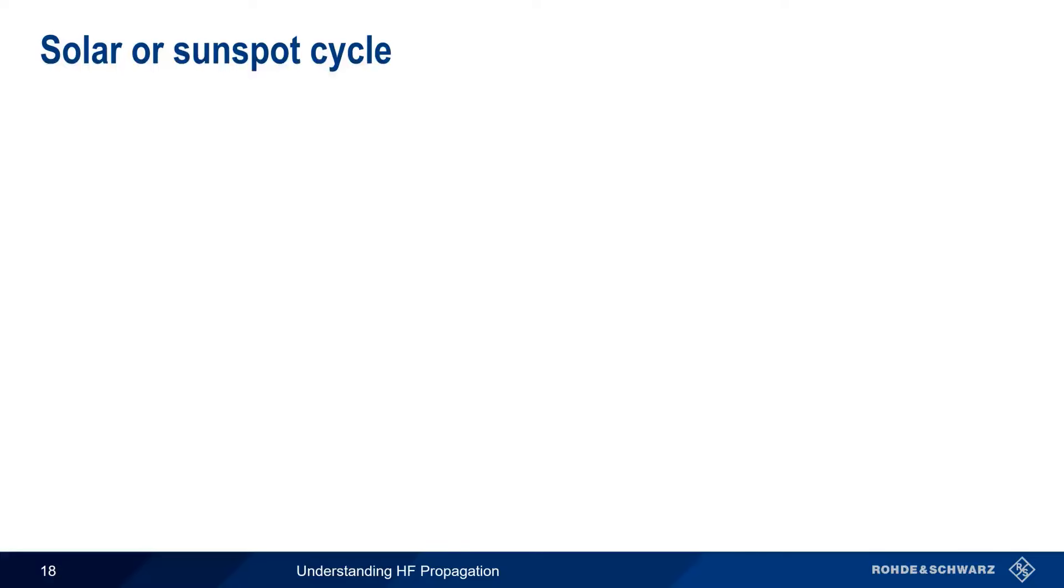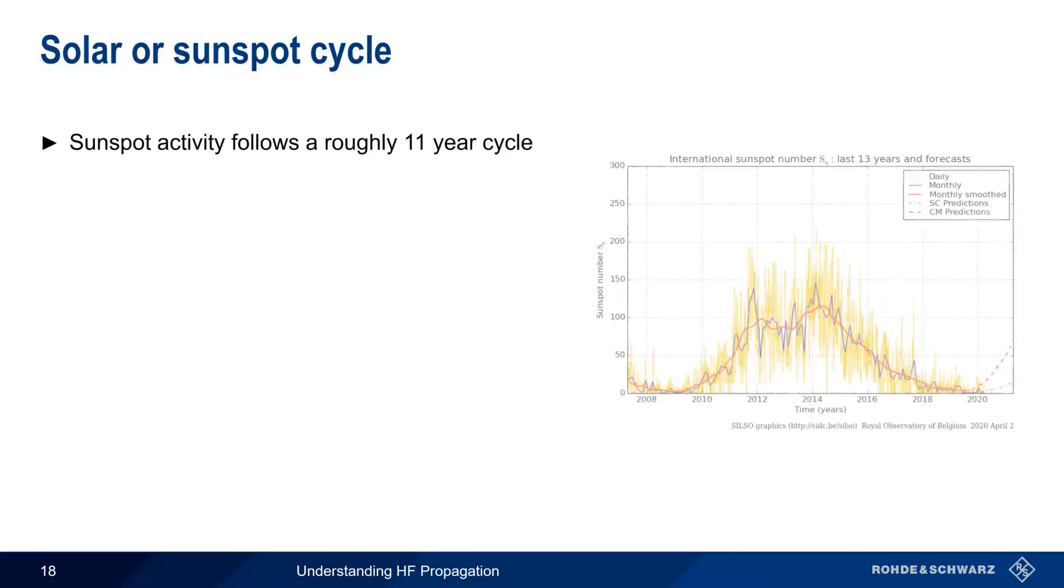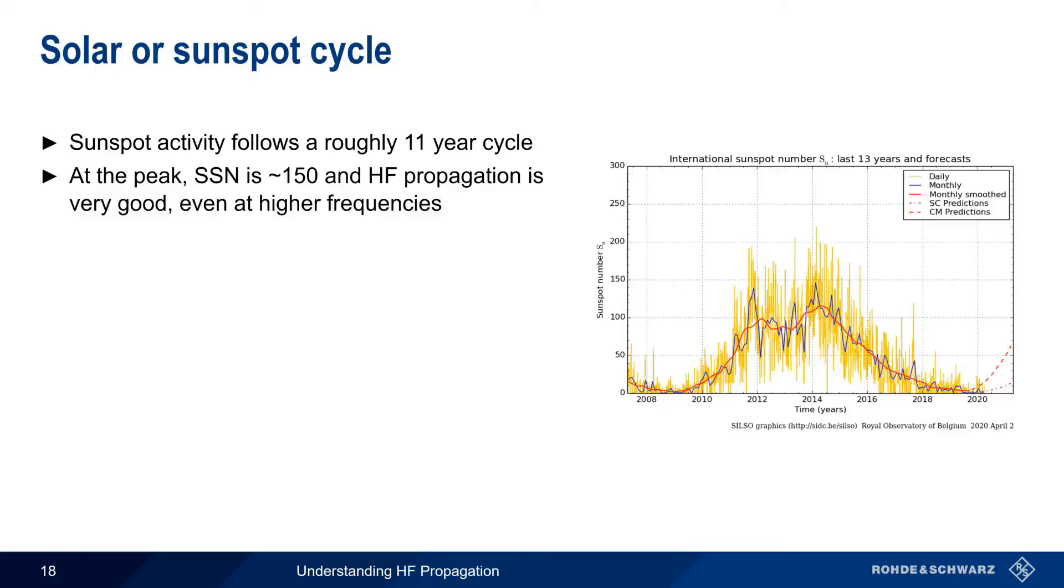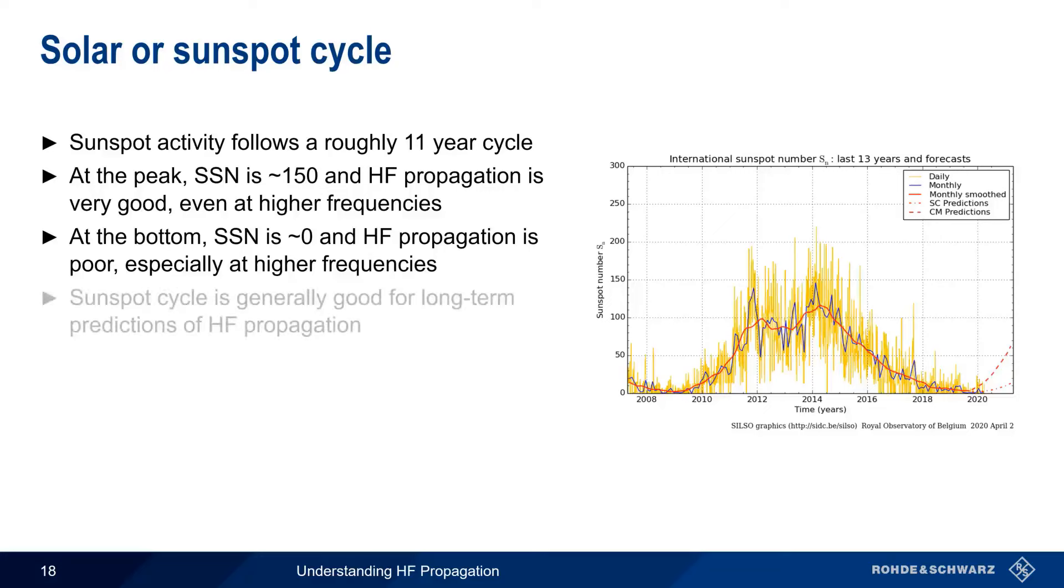And sunspot numbers do change over time. In fact, sunspot activity follows a roughly 11-year solar or sunspot cycle, as shown in this graph. Generally speaking, sunspot numbers are usually around 150 at the peak of a cycle, during which time HF propagation is very good on most frequencies, including higher frequencies. At the bottom or trough of the sunspot cycle, sunspot numbers close to zero, meaning much poorer HF propagation. Given the period of the sunspot cycle, it should be clear that sunspot cycle is only good for predicting long-term HF propagation, that is, in terms of years, and over this time period it is fairly reliable.